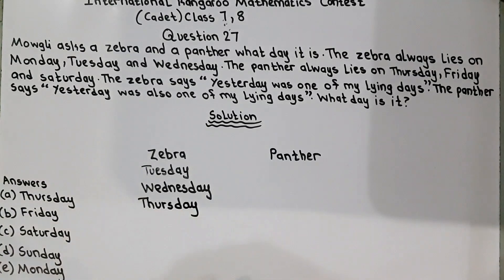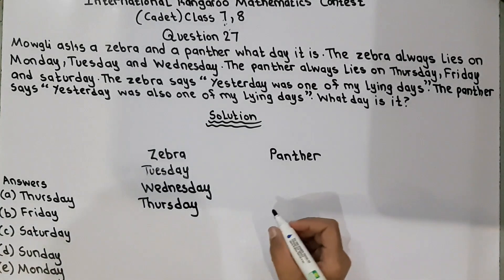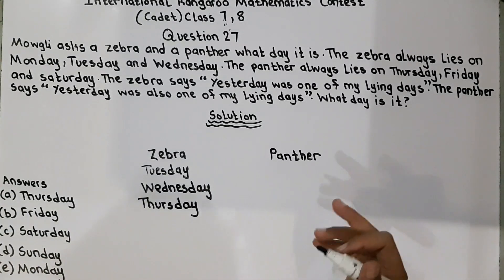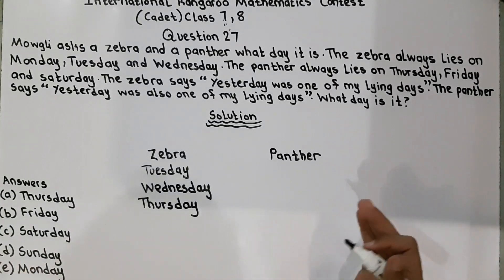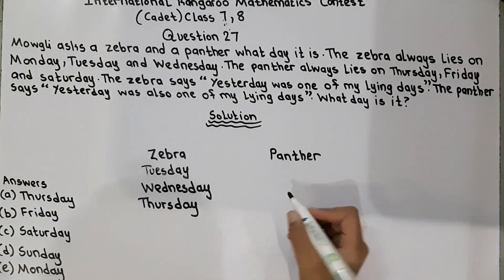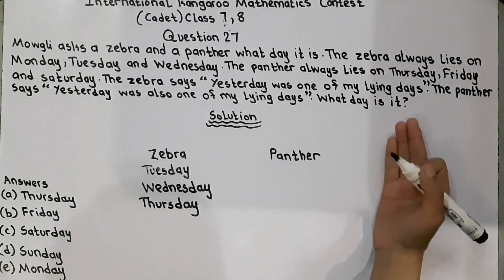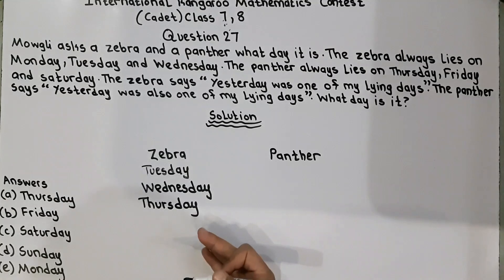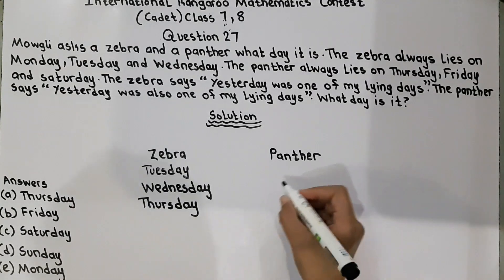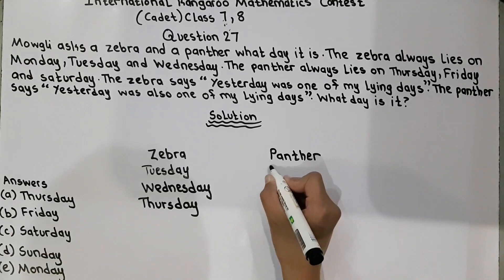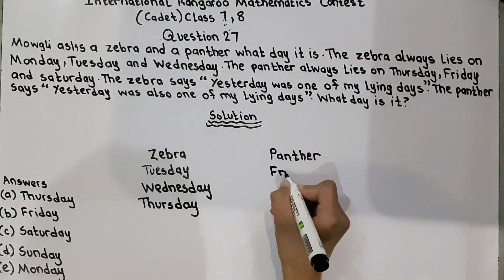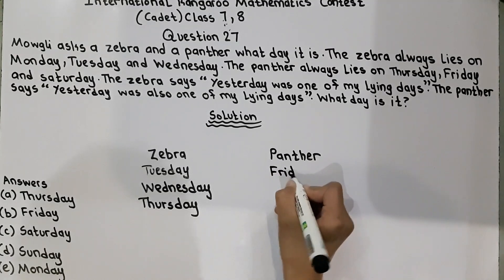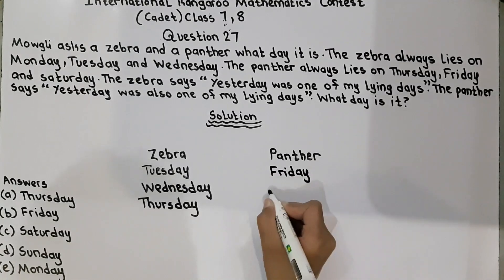Now we will write the lying days of the panther. The panther lies on Thursday, Friday and Saturday. We will not write Thursday because Wednesday is the zebra's lying day, not the panther's. So we will write Friday and Saturday.